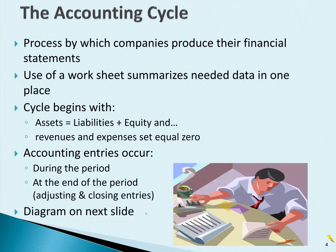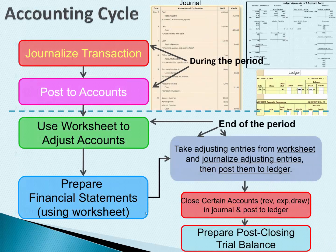We're going to have a diagram on the next slide showing the accounting cycle. The accounting cycle starts up in the upper left. Notice this dashed line represents the accounting period, and everything below the dashed line represents the activities that happen at the end of the accounting period.